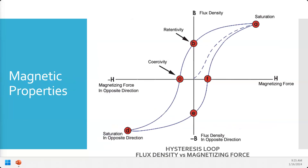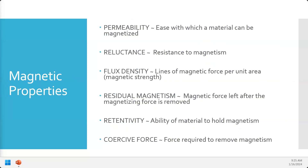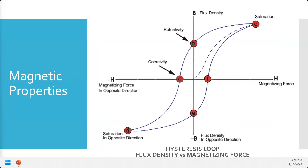If we keep adding magnetizing force beyond the saturation point, it's not going to increase the field any higher. What does increase is heat — running current through a part heats it up. So once we reach saturation, adding additional current only has the potential to damage the part. We want a level of current that reaches the saturation point without overheating the part.